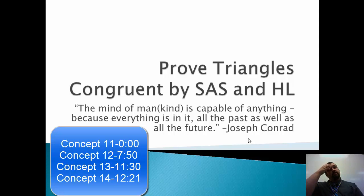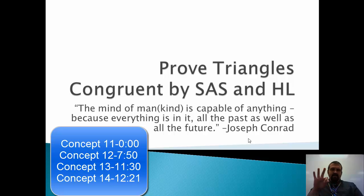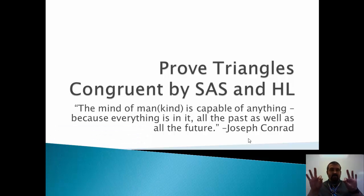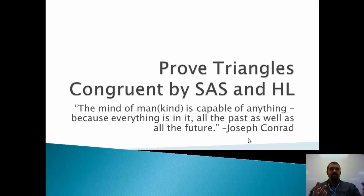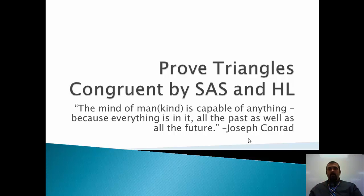Good afternoon class. Today we are in Chapter 4, Section 4, and we will be looking at the case of where we have two sides of a triangle congruent to two other sides in a triangle. Last time we saw that if three sides in one triangle match up to three sides in another triangle, they have to be congruent. But today we're focusing on all the cases where two sides are congruent to two other sides.